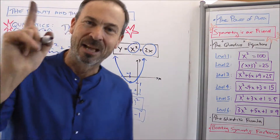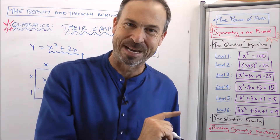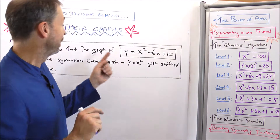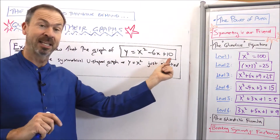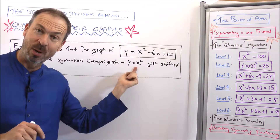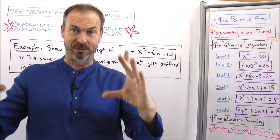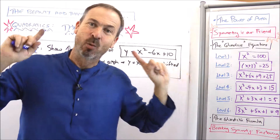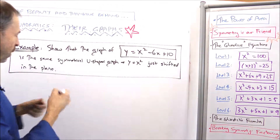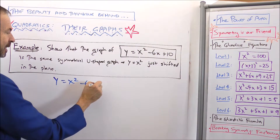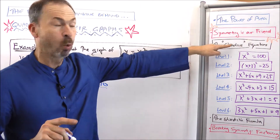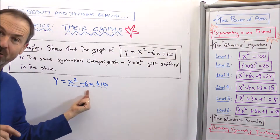We can do this for any quadratic expression. Let me do another example to show you. Let's show that the graph of y equals x squared minus 6x plus 10 is really the same as the symmetrical u-shaped graph of y equals x squared, just shifted horizontally or vertically or both. The way we do it is through the symmetrical quadrous method. So let's focus on the quadratic piece of that expression and apply the symmetrical technique.